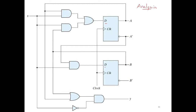Let us compute the input to each flip-flop. Since there are two flip-flops, we differentiate them using their state labels. The output of the first flip-flop is a, so we write DA as its input equation, and a(t+1) as its output. Similarly, b(t+1) is the output of the second flip-flop, and its input equation is DB.